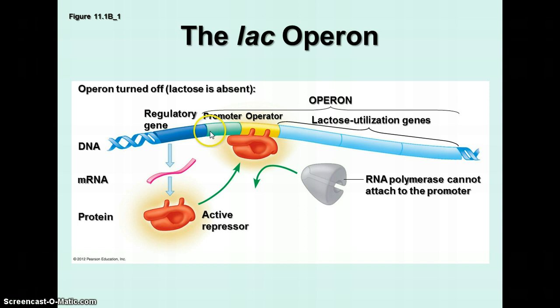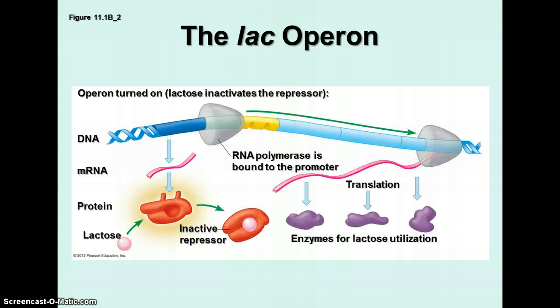Here we have the regulatory gene and the promoter, where the RNA polymerase attaches, the operator, which is the switch, and here's the repressor. When the repressor is in place, that means lactose is absent. There is no lactose present, so RNA polymerase can't attach and it can't transcribe those genes to produce the proteins for lactose utilization. But when lactose is present, lactose binds with the repressor, which inactivates it and removes it from the operator. Therefore the RNA polymerase can attach and transcribe the DNA sequence to be translated into the enzymes needed for the utilization of lactose sugar. That's basically the way it works in bacteria.